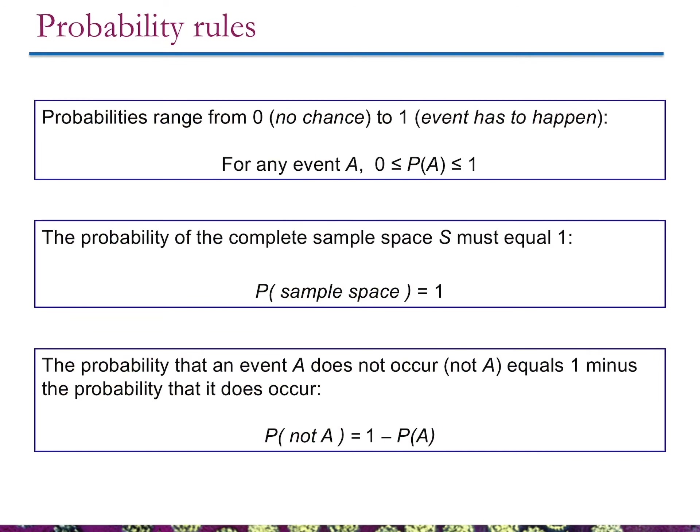Let's talk about some probability rules. There are a couple that are most important to understand. Probabilities range from 0 to 1. If an event has a probability of 0, there's no chance of it occurring. If it has a probability of 1 or 100%, it absolutely must occur. As notation: the probability of event A is greater than or equal to 0 and less than or equal to 1 — meaning somewhere between 0% and 100%.